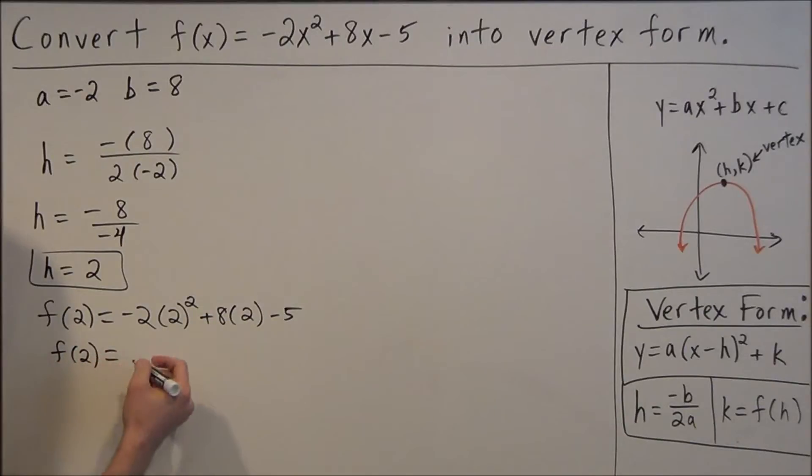So we just complete the order of operations. The first term should work out to negative 8, positive 16 for the second term, and then minus 5. So we'll have f(2) equals and we'll have 8 minus 5 is equal to 3.